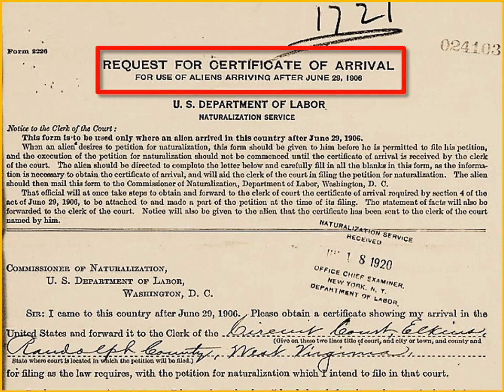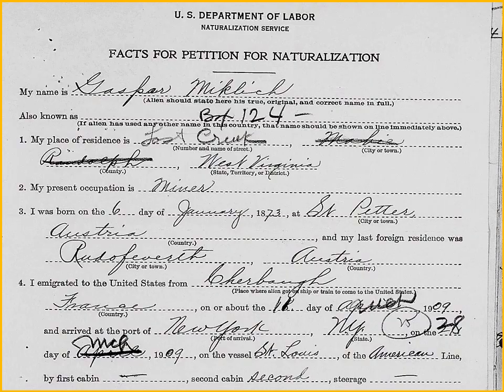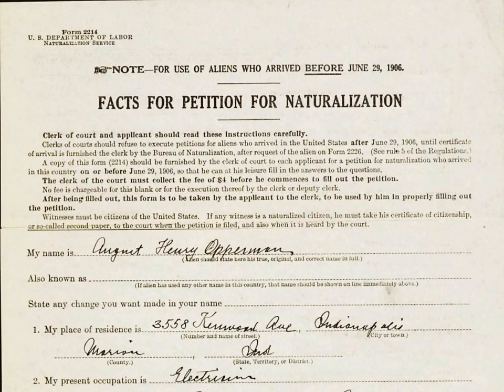You were given this form and were supposed to request a certificate showing your arrival in the United States, forwarded to the clerk handling your naturalization. Along with that was a fax for petition for naturalization — you'd provide enough information for someone to find you on a ship manifest, including when you arrived, the port, the date, and even your accommodations.